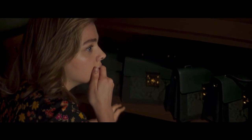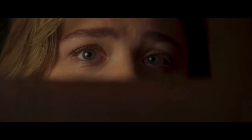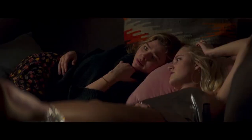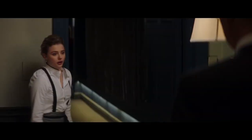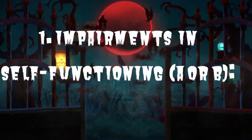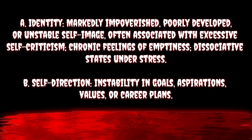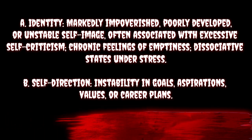If we're going with Greta having a personality disorder, we're leaning more towards that than something biological such as schizophrenia. To diagnose emotionally unstable personality disorder, the following criteria must be met. Number one: impairments in self-functioning — A or B. A, identity: markedly impoverished, poorly developed or unstable self-image, often associated with excessive self-criticism, chronic feelings of emptiness and dissociative states under stress. B, self-direction: instability in goals, aspirations, values or career plans. Number two: impairments in interpersonal functioning — A or B. A, empathy: compromised ability to recognise the feelings and needs of others, associated with interpersonal hypersensitivity and perceptions of others selectively biased towards negative attributes or vulnerabilities. B, intimacy: intense, unstable and conflicted close relationships marked by mistrust, neediness and anxious preoccupation with real or imagined abandonment.